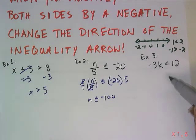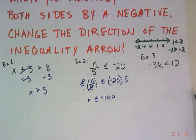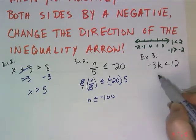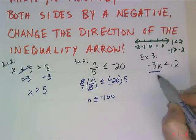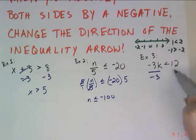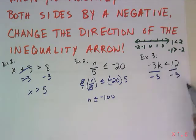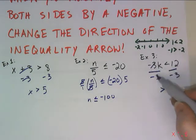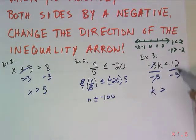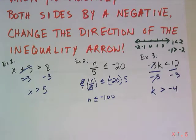In example 3, however, things change. k has been multiplied by negative 3, so I divide both sides by negative 3. Since I'm dividing both sides by a negative, the inequality symbol changes direction — from less than to greater than. The negative 3 cancels, leaving k, and 12 divided by negative 3 is negative 4. So k > -4.